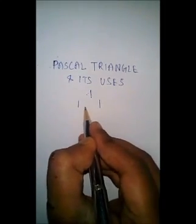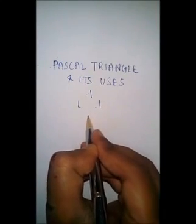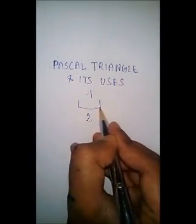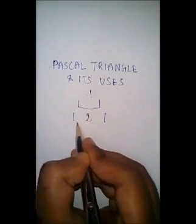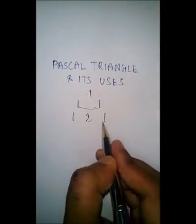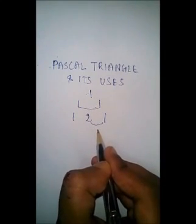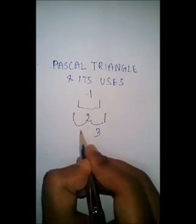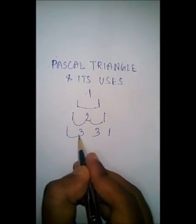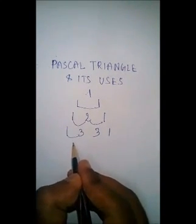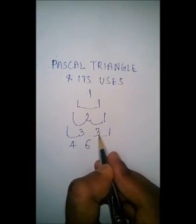We add these two numbers: 1 plus 1 gives us 2. Then again we put 1 on the left-hand side and 1 on the right-hand side. We add 1 plus 2 to get 3, and 2 plus 1 to get 3, giving us the row 1, 3, 3, 1.